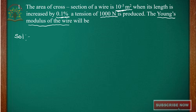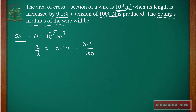We will write what is given and what we have to find out. Given: A = 10⁻⁵ m². ΔL/L = 0.1% = 0.1/100 = 1 × 10⁻³. F = 1000 N. Y = ?